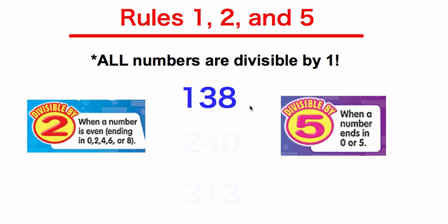Let's check some examples. We have 138. Is 138 divisible by 2? We look at that last digit — since this number ends in an 8 and it's an even number, it is divisible by 2. Looking at the rule for 5, when a number ends in 0 or 5 — this does not end in a 0 or 5, so 138 would not be divisible by 5.